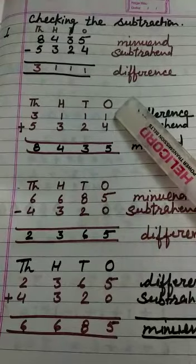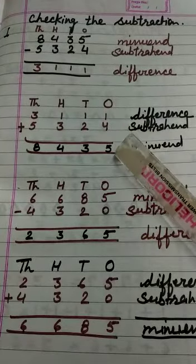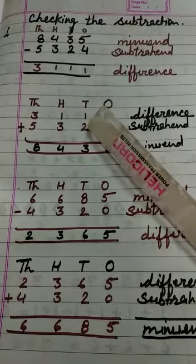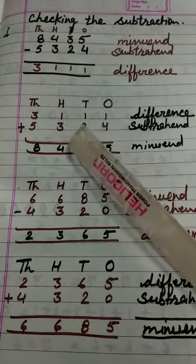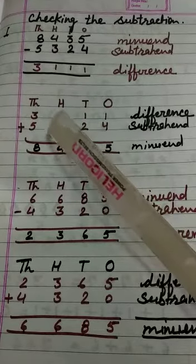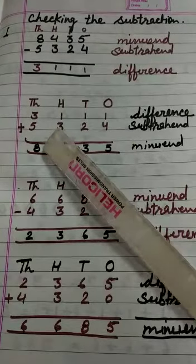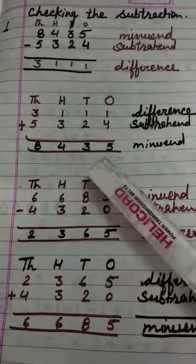Now we will add: 1 plus 4 equal to 5. 1 plus 2 equal to 3. 1 plus 3 equal to 4. 3 plus 5 equal to 8. Means, the answer is 8,435.